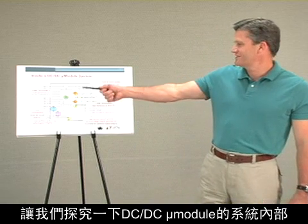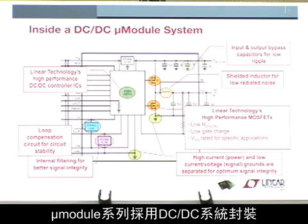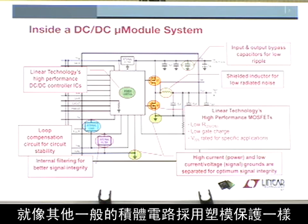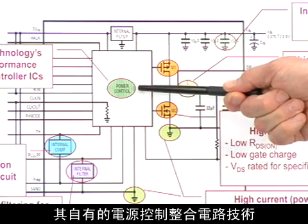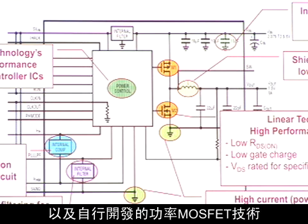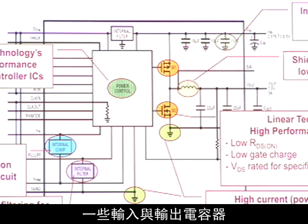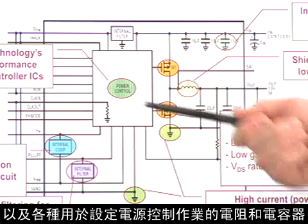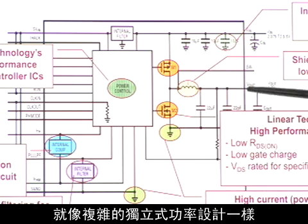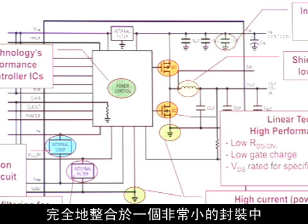Let's explore what's inside a DC-DC MicroModule system. MicroModules are DC-DC systems in a package, protected like any other regular integrated circuit, molded over. Inside the package, Linear Technology has its own power control integrated circuit technology along with its own power MOSFET technology. Included is a shielded inductor, some input and output capacitors, and a variety of resistors and capacitors to set up the operation of the power control — just like a complex discrete power design, but fully integrated into a very small package like an integrated circuit.